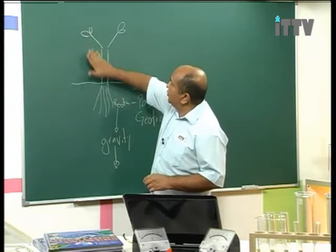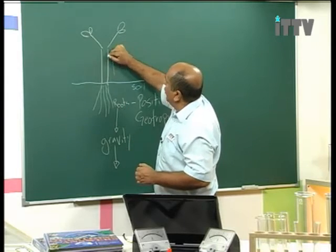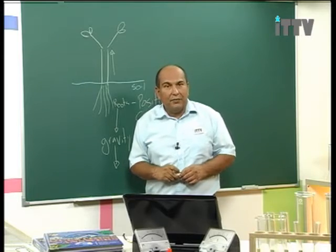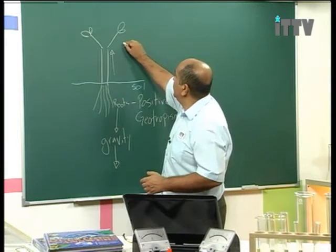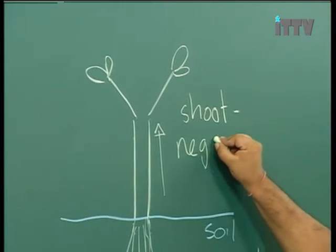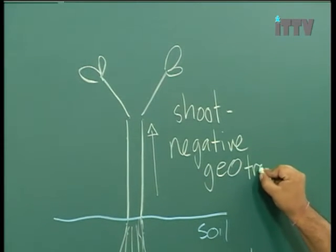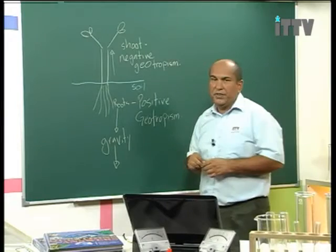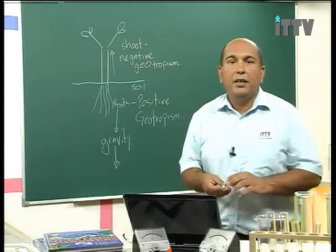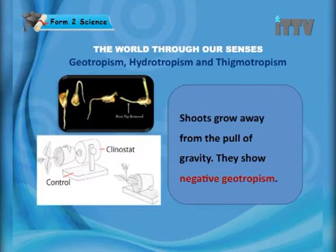Up here, the leaves and shoots are growing away from gravity. A growth in the opposite direction is a negative tropism, so the shoot is exhibiting negative geotropism. Remember: towards gravity is positive geotropism, away from gravity is negative geotropism. Shoots grow away from the pull of gravity — they show negative geotropism.